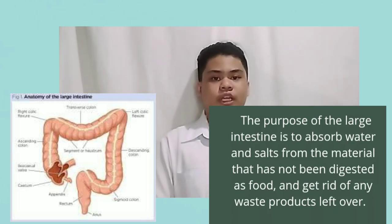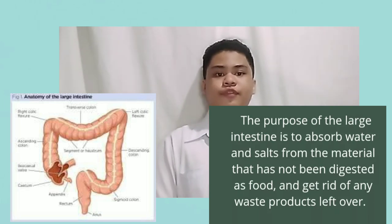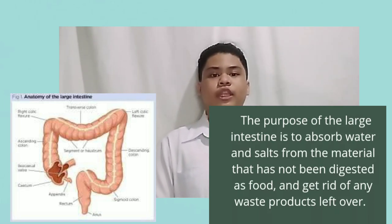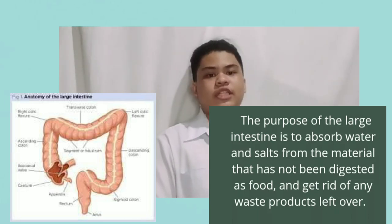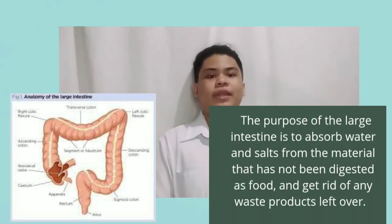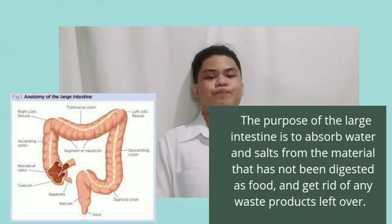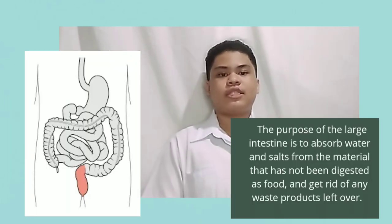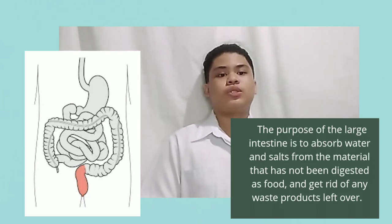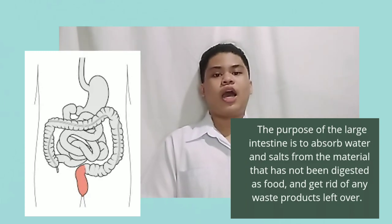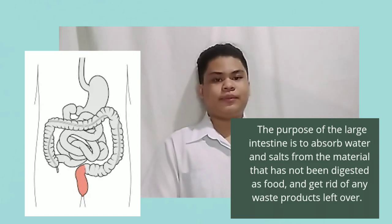Waste products from the digestive process include undigested parts of food, fluid, and other cells from the lining of your GI tract. The large intestine absorbs water and changes waste from liquid into stool. The rectum, the lower end of the large intestine, stores stool until it pushes stool out through your anus during a bowel movement.